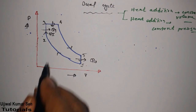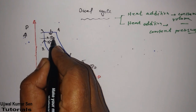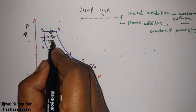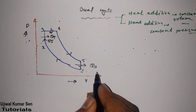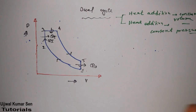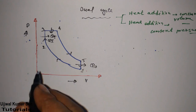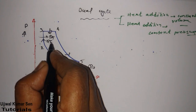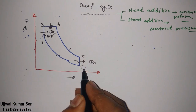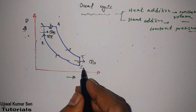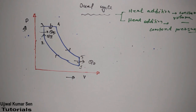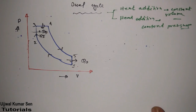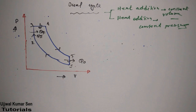For notation, I am using 'i' for initial (heat in) and 'o' for out — or you can use 'e' for entering and 'o' for out, whichever is clearer for you. This completes the PV diagram for the dual cycle.